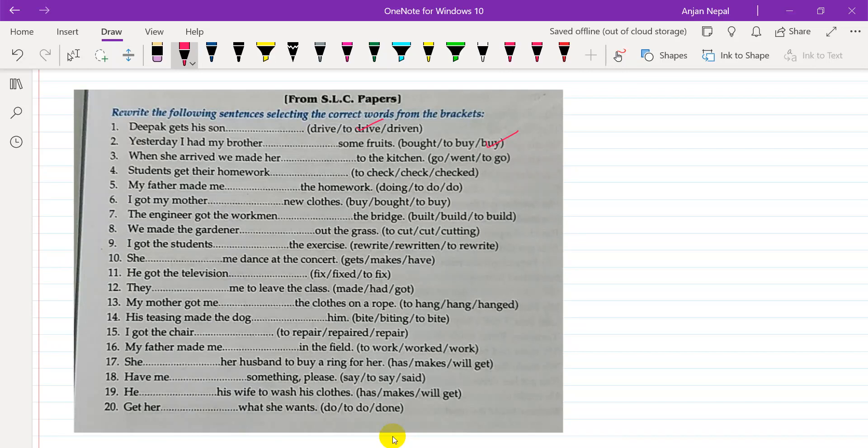When she arrived, we made her to go to the kitchen. We made her go to the kitchen. Number four: students get their homework checked by the teacher. Next, my father made me do the homework.